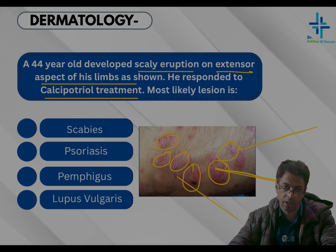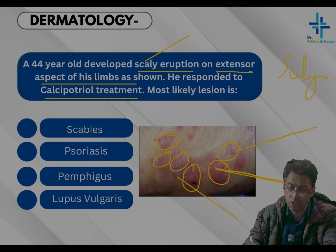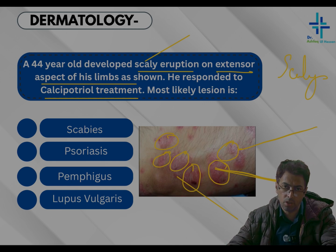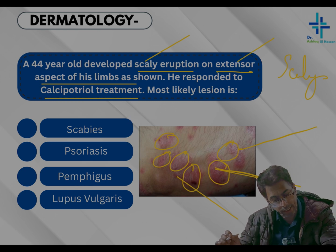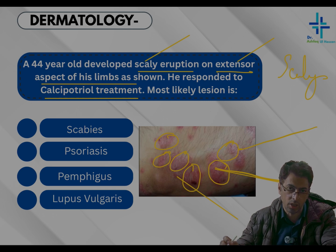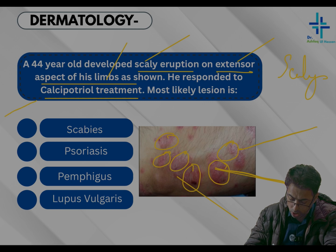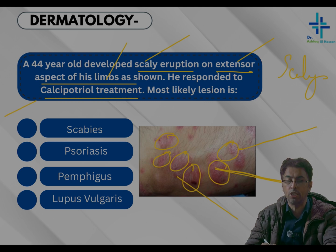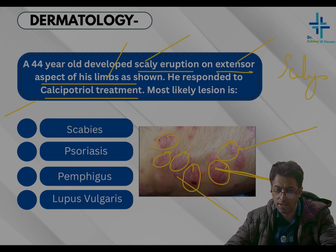You have to recognize those lesions and the clues given. First, the lesions are scaly — scaly lesions are characteristic of psoriasis. Second, they are on the extensor aspect — psoriatic lesions are characteristically seen on the extensor aspect, unless it is inverse psoriasis. Third, the limbs are most affected. Fourth, he responds to calcipotriol, which is a vitamin D analog and one of the drugs used in the treatment of psoriasis, in addition to coal tar and other drugs.